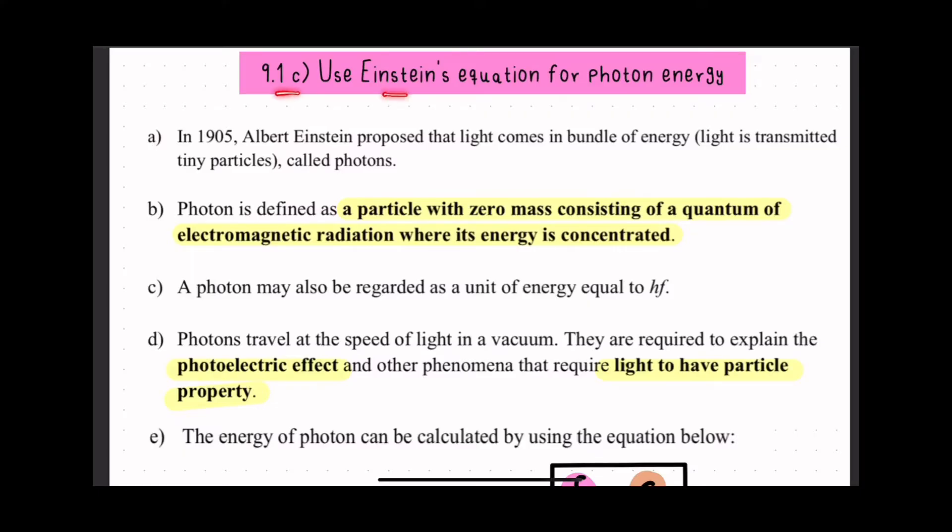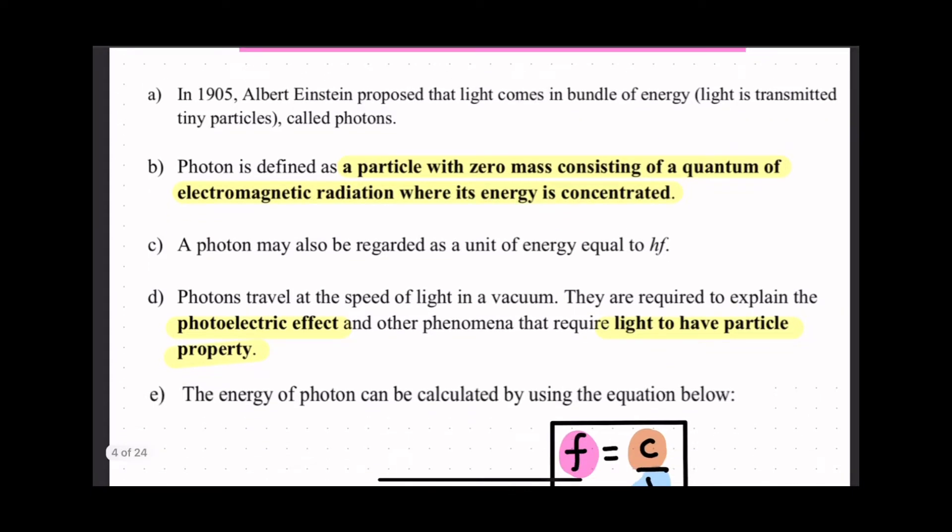9.1c Use Einstein's equation for photon energy. Albert Einstein proposed that light comes in bundles of energy, transmitted in tiny particles called photons. Photon is defined as a particle with zero mass consisting of a quantum of electromagnetic radiation where its energy is concentrated.